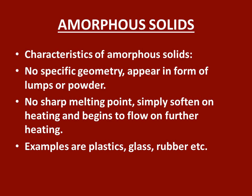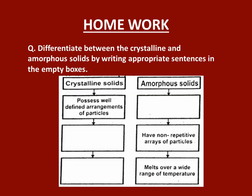Characteristics of amorphous solids: amorphous solids have no specific geometry; they appear in the form of lumps or powder. They don't have a sharp melting point and they simply soften on heating and begin to flow on further heating. Examples of amorphous solids are plastics, glass, rubber, etc. For homework, you have to differentiate between crystalline and amorphous solids by writing the appropriate sentences in the empty boxes. Thank you. Allah Hafiz.